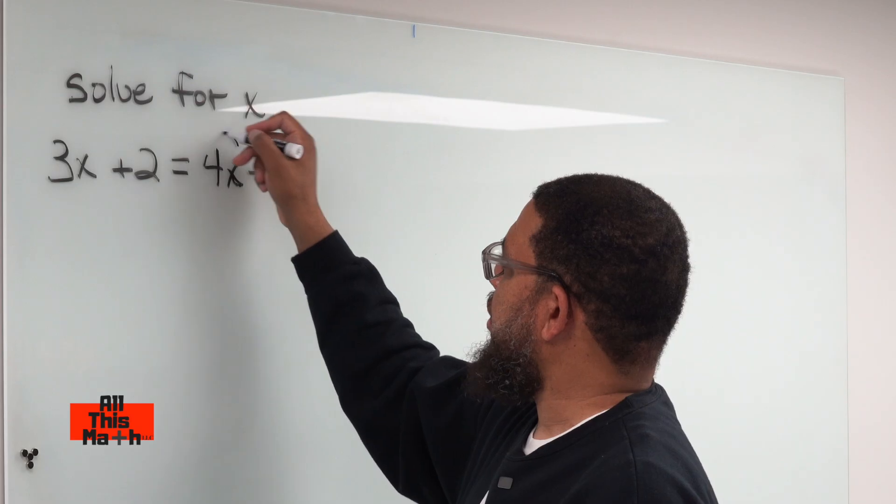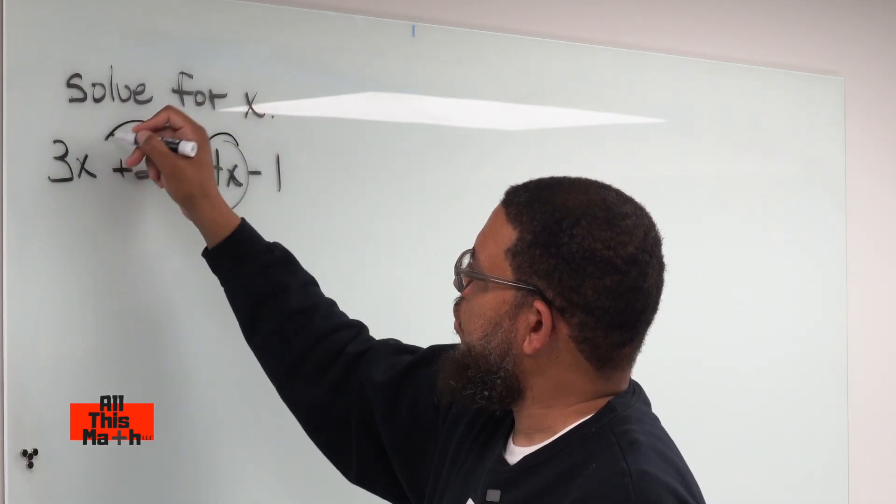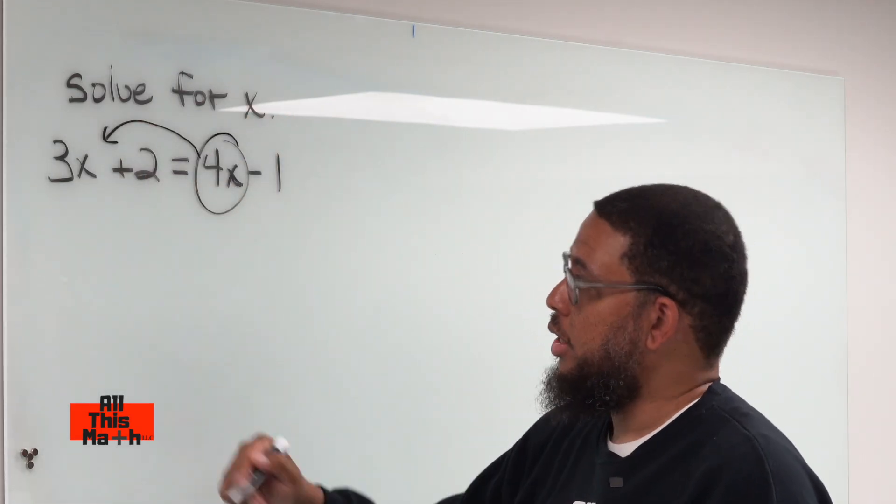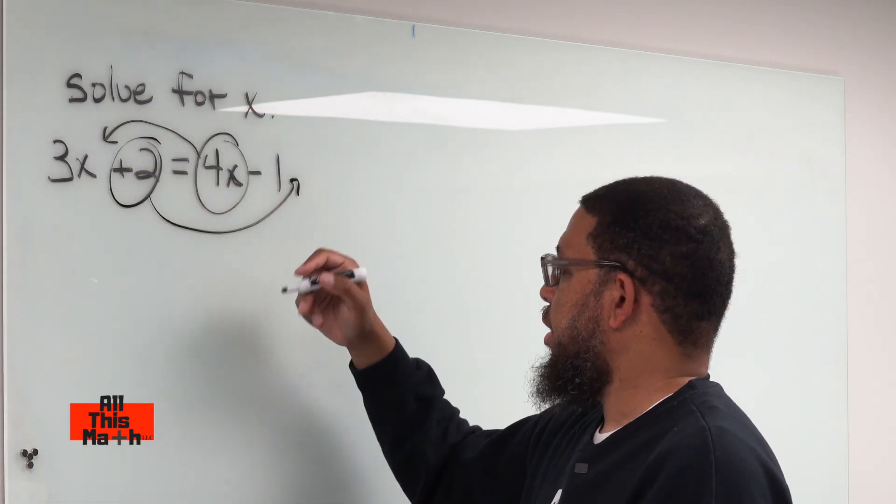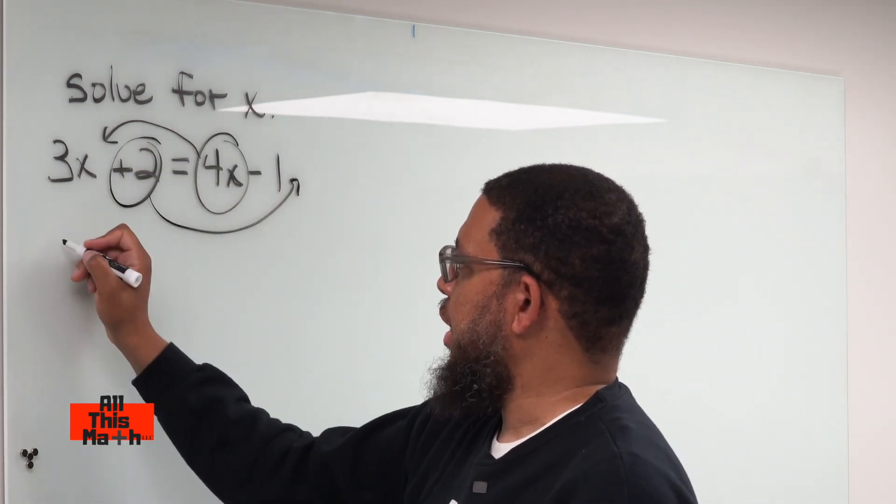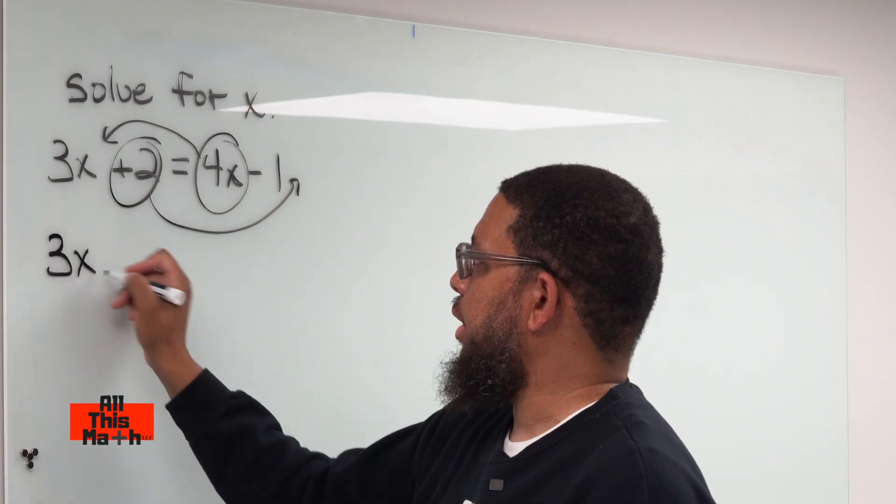So basically, what we're going to do is I'm going to take this 4x, move it over to the other side. That's called transposing. And I'm going to take this 2, move it over to the right side, and that's transposing again. So now I rewrite the equation, 3x.